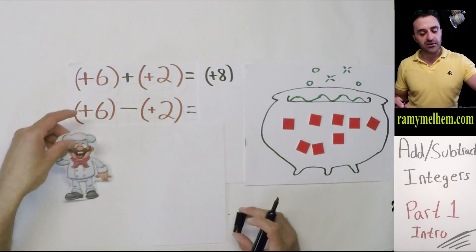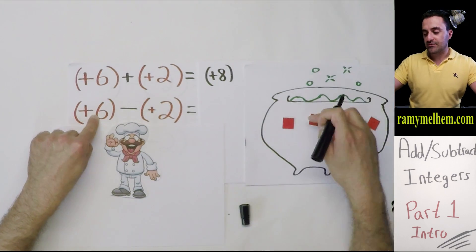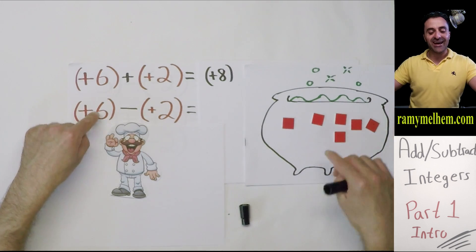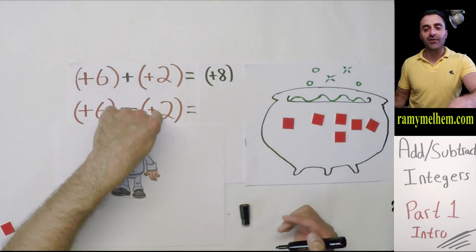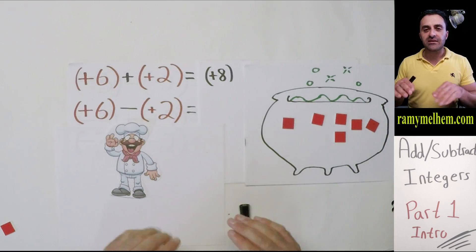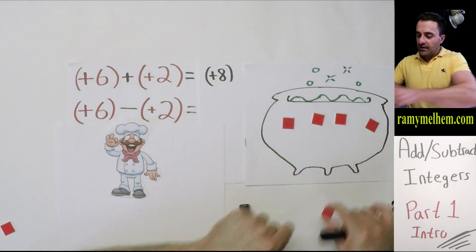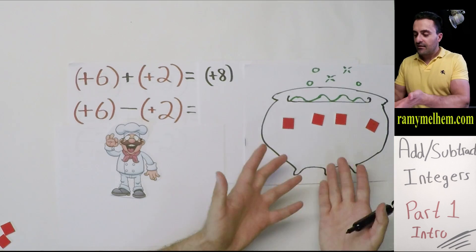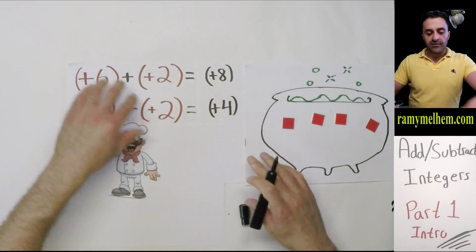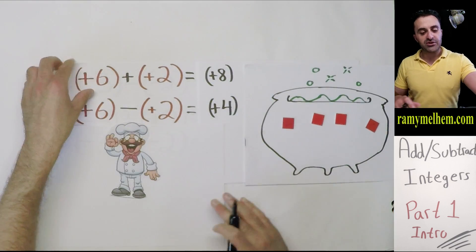The second example: the chef puts in six hot ones, then the recipe says to take out two hot ones. Remember, if you take out hot cubes, the temperature will cool off. He takes two of them out, looks at what's left over and sees it's positive four. It went from positive six down to positive four - it cooled down just as we expected.